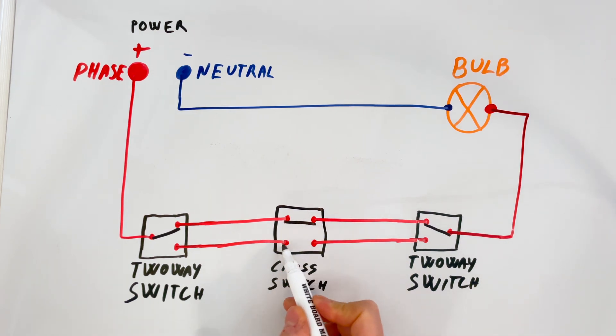The cross switch reverses the connection between the traveler wires, changing the current path. When you toggle any switch, the circuit either opens or closes, turning the light on or off.